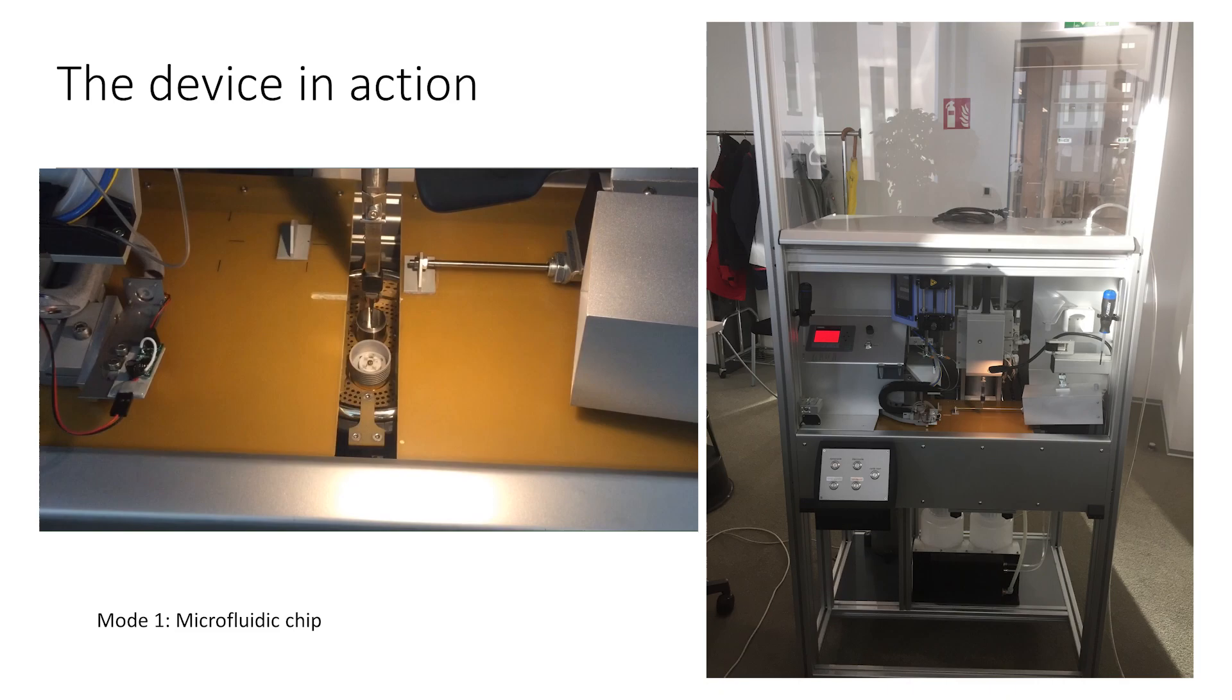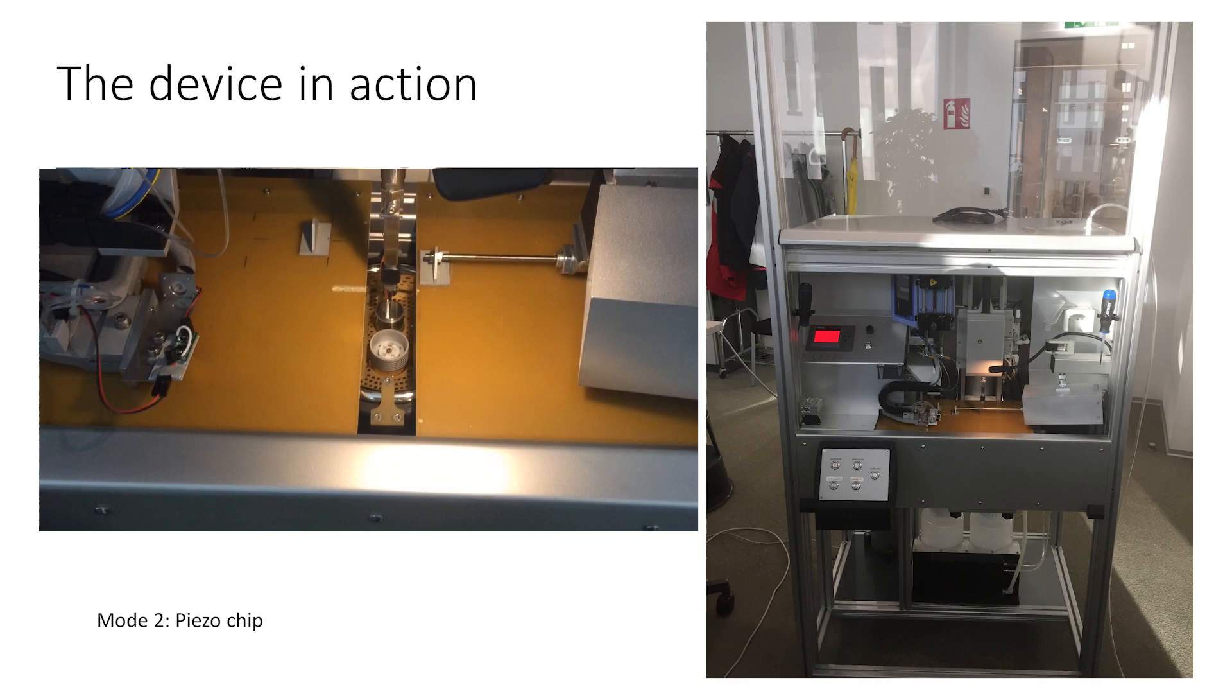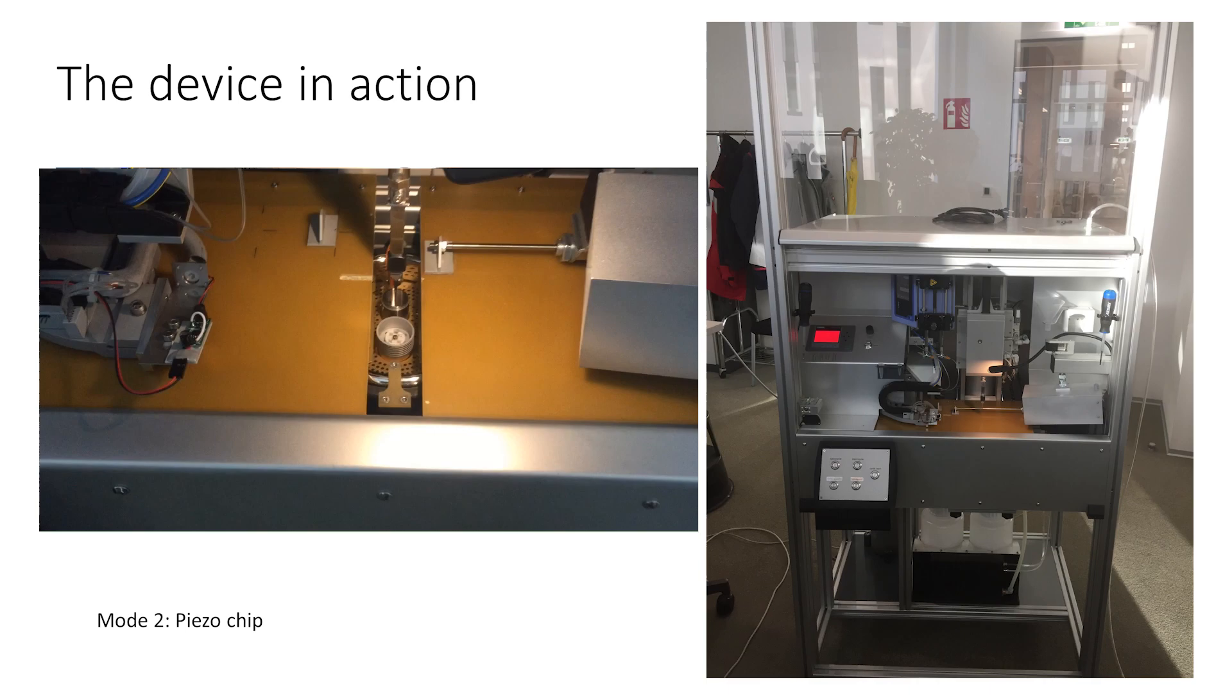One is the microfluidic chip which we have here. There we see the machine working, the chip goes through and the forceps falls down. In an alternative approach we use a piezoelectric sprayer device that we built that mixes and sprays at the same time. So we can be even a little bit faster than with the microfluidic chip and this is working here. So we see it spraying and falling down. All these movies are slowed down. This is done with high speed cameras so this is much faster. This happens in milliseconds.